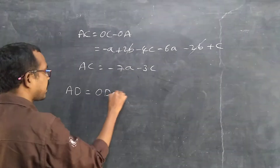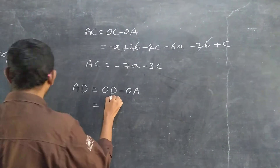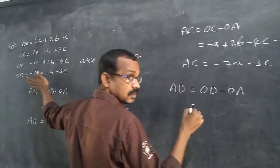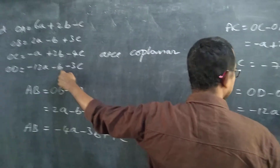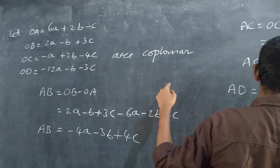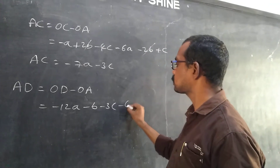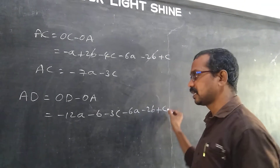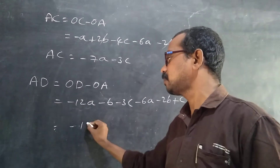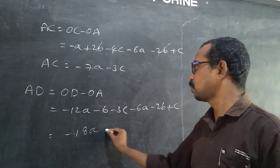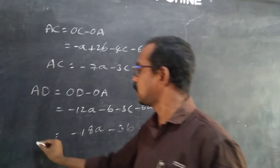Similarly, find AD. AD equals OD minus OA. OD is minus 12a minus b minus 3c, minus OA which gives minus 6a minus 2b plus c. So AD equals: minus 12a minus 6a = minus 18a, minus b minus 2b = minus 3b, minus 3c plus c = minus 2c. Therefore AD equals minus 18a minus 3b minus 2c.